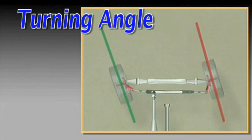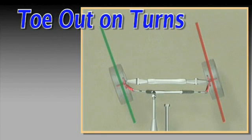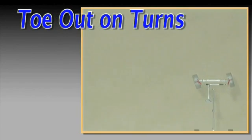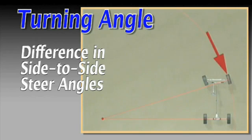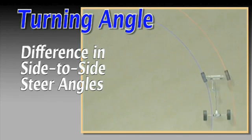Turning angle, also referred to as toe-out on turns, describes the difference in side-to-side steer angles of the front wheels as the vehicle turns.